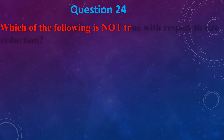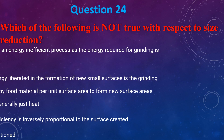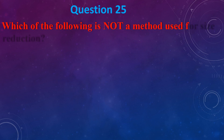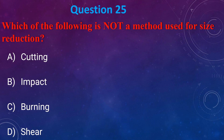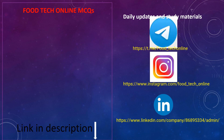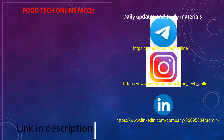Which of the following is NOT true with respect to size reduction? (a) Size reduction is an energy-inefficient process as the energy required for grinding is very high, (b) Some of the energy liberated in forming new small surfaces is grinding energy required per surface area — the rest is generally just heat, (c) Crushing efficiency is universally proportional to the surface created, (d) None of the mentioned. The answer is (c). Which of the following is NOT a method used for size reduction? (a) Cutting, (b) Impact, (c) Burning, (d) Shear. The answer is (c) burning. For more videos, check the link in the description. For daily updates and study material, follow our Telegram, Instagram, and LinkedIn pages. Subscribe to our channel and share with your friends. Thank you.